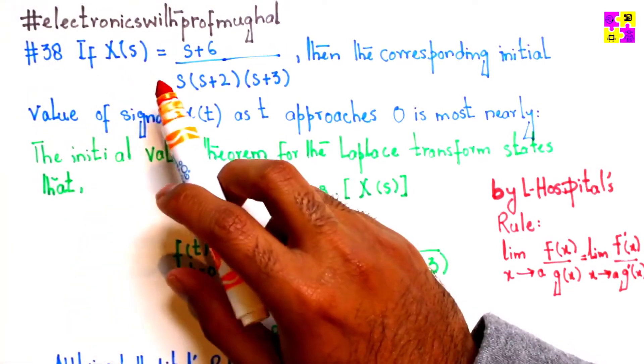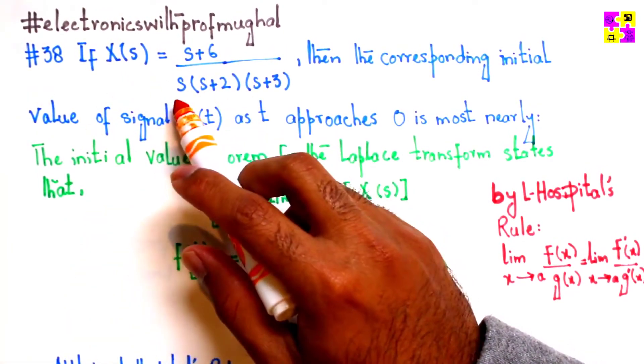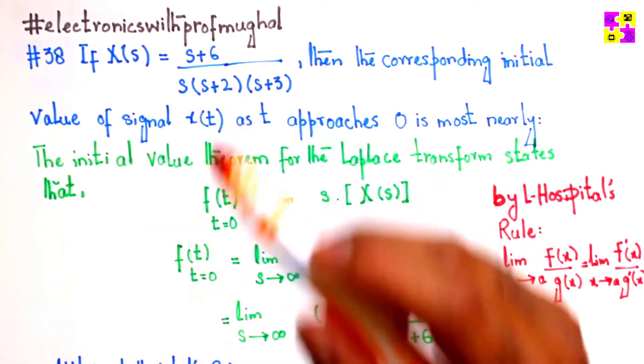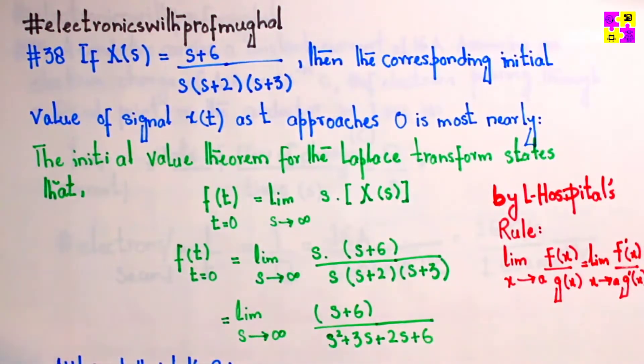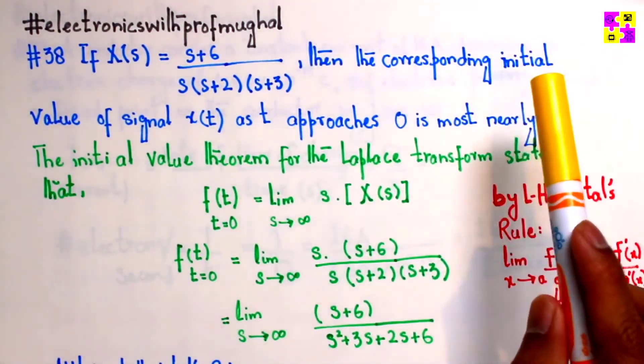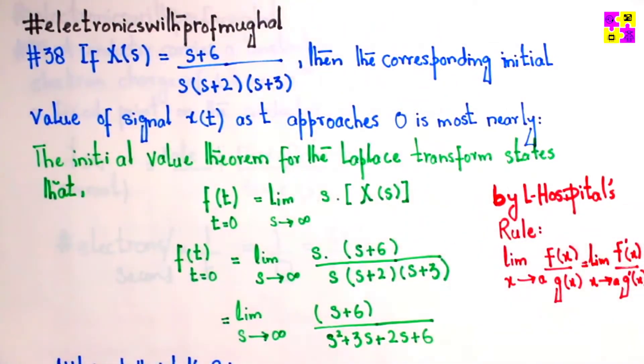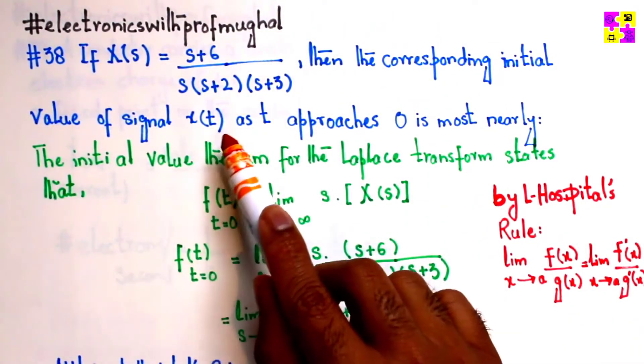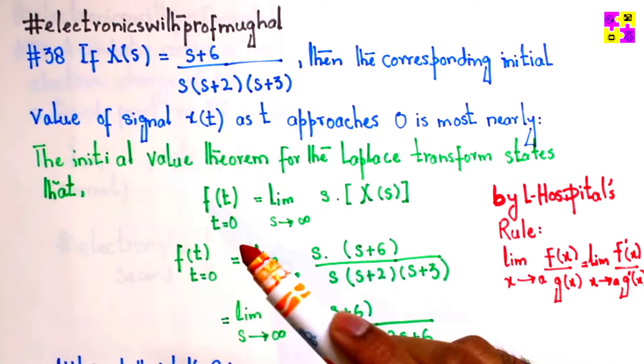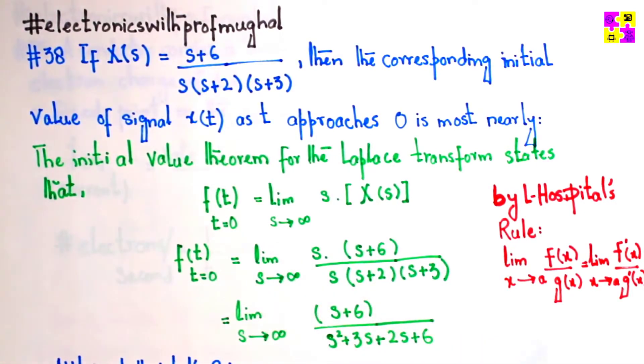If X(s) equals s plus 6 over s times (s plus 2) times (s plus 3), then the corresponding initial value of signal x(t) as t approaches 0 is most nearly: